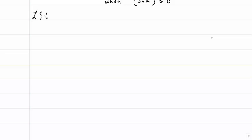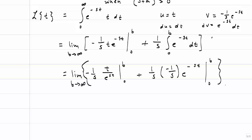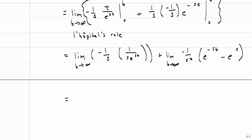Let's do one more example: the Laplace Transform of t. Where we're going to go with this is taking an entire differential equation, finding the Laplace Transform of both sides, solving it algebraically, and then transforming it back into the time domain. But right now, the first step is how to translate the time domain into the S domain. To do this, we're going to have to integrate by parts. Now that we've set up our u and v, we'll go ahead and integrate. We need to use L'Hôpital's rule on the first term, and the second term we've done before. The first term goes to 0 as b goes to infinity, and what's left of the second term is simply 1 over s squared. So the Laplace Transform of t is simply 1 over s squared.